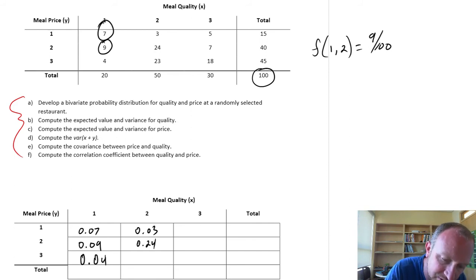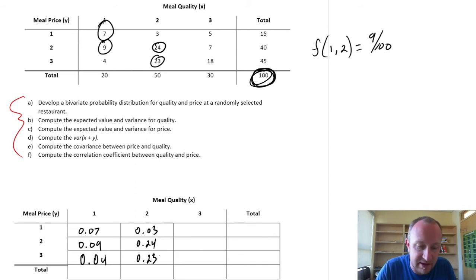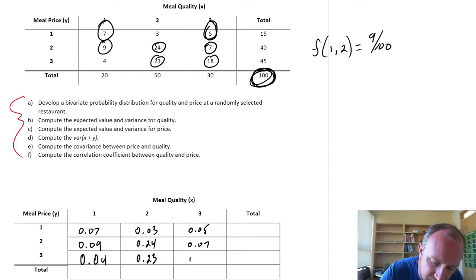Moving on, this is 0.24. So I'm looking at this value divided by the total number of restaurants. The next one, 23 divided by 100. So this is 23 over 100. That is the restaurants that are considered expensive but medium quality of food. Moving on up to here now, this is going to be the inexpensive high quality meal, 0.05. Here we have the moderately expensive but good quality food, 0.07. And finally, here we have the very expensive high quality food, 0.18.